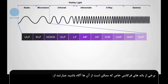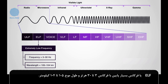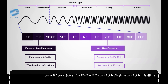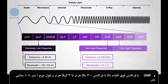Some of the specific frequency bands you may be aware of are ELF, or Extremely Low Frequency, with a frequency of 3 to 30 Hz and a wavelength of 10⁵ to 10⁴ km. VHF, or Very High Frequency, with a frequency of 30 to 300 MHz and a wavelength of 10 to 1 m. And UHF, or Ultra High Frequency, with a frequency of 300 MHz to 3 GHz and a wavelength of 1 m to 10 cm.